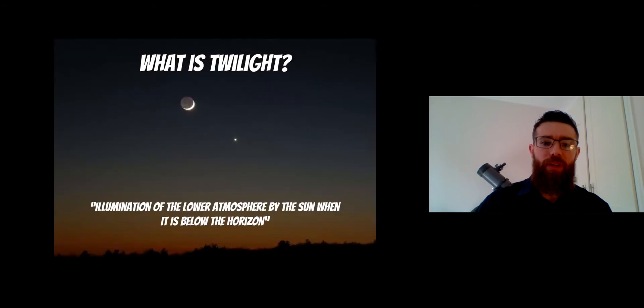If we're not familiar with what twilight is, it's when the Sun has gone below the horizon and is no longer visible in the sky, yet the sky itself is still illuminated. You've got a period of time from when the Sun sets below the horizon to when you get full darkness, and that's the period of twilight. The actual definition is the illumination of the lower atmosphere by the Sun when it's below the horizon.